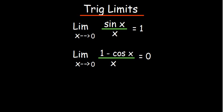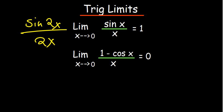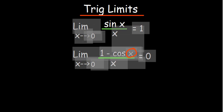In this video we are going to go over trig limits. The two identities to keep in mind: first, the limit as X approaches zero of sine X over X equals one — where what is attached to sine should be the same as the denominator. Second, the limit as X approaches zero of one minus cosine X over X equals zero, again provided the argument matches the denominator.